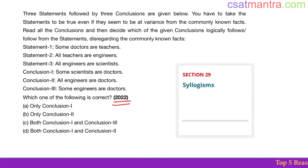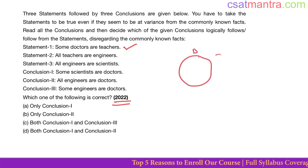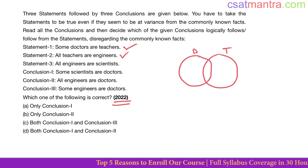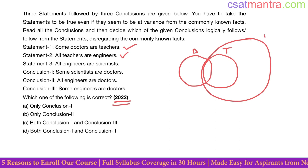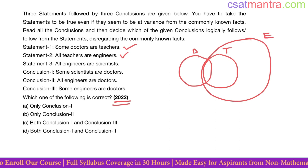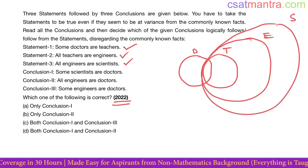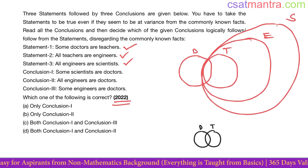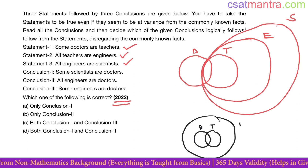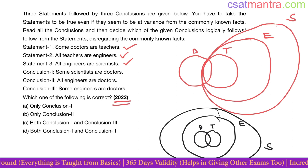2022 question based on syllogisms. Statement one: some doctors are teachers. All teachers are engineers — that means the teachers circle should be inside the engineers circle. All engineers are scientists. Now draw one possibility: some doctors are teachers, all teachers are engineers, all engineers are scientists.